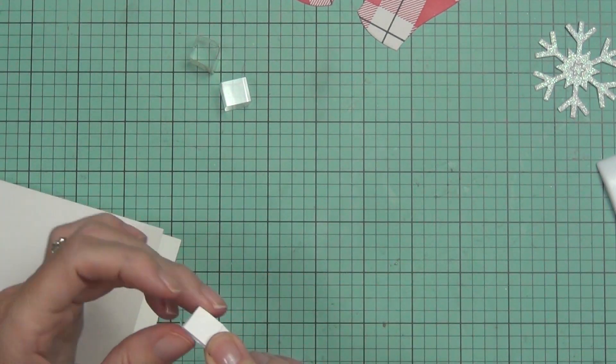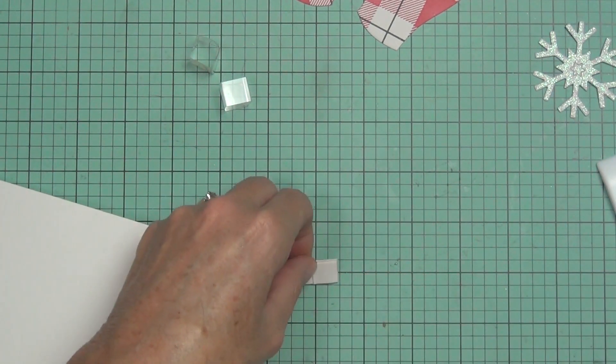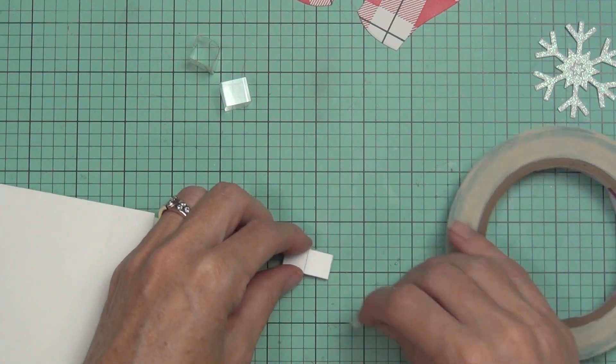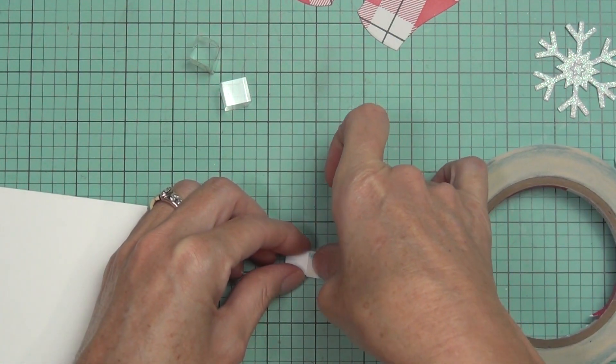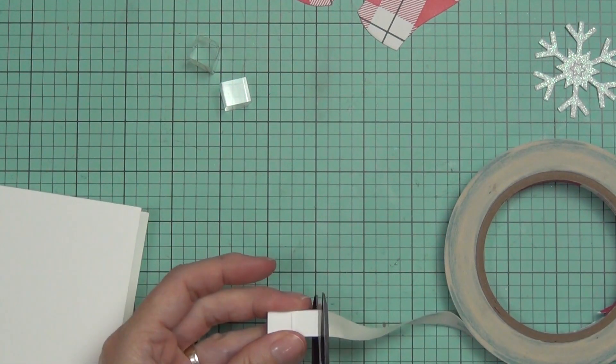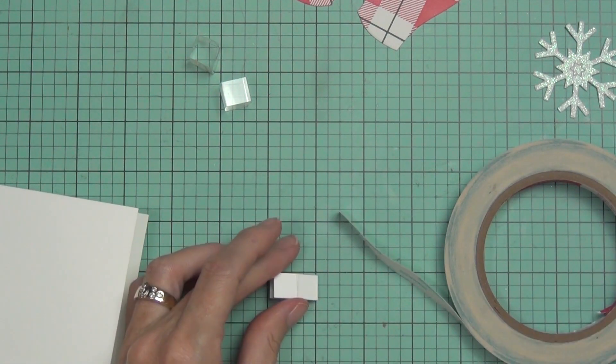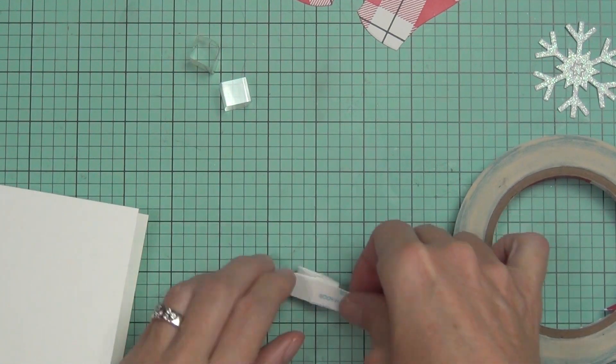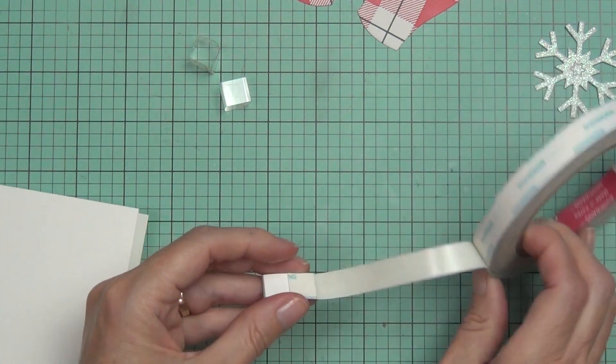So that means I'm going to put a piece on each side, and I'm using the Be Creative tape yet again. Here I'm trying to be careful not to let any of the tape hang over the edges because I don't want it to sort of adhere to the inside of the card.